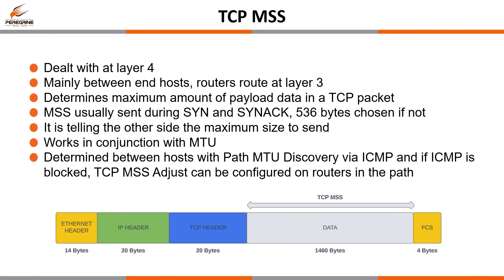If GRE is used as an example, we would set a TCP MSS adjust of 1436 bytes to account for the 24 bytes of additional space taken up. If we continue sending at 1460 bytes, by the time we have added 40 bytes of headers that would exceed the 1476-byte IP MTU which we should have already configured on the router.